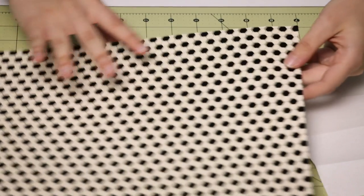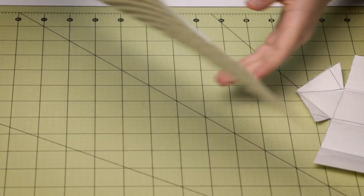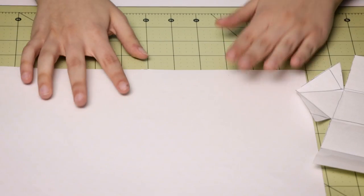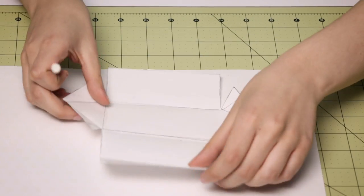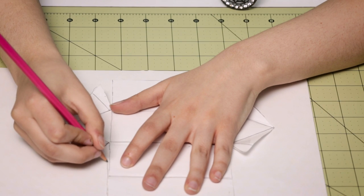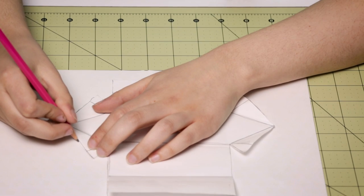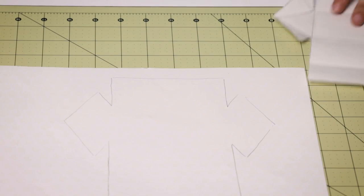So the first thing we're going to be doing is taking our card stock and our template. I'm just going to flip this around so the white side is showing. And we're going to take our pencil, and we're just going to set our template right on top and just trace around it.